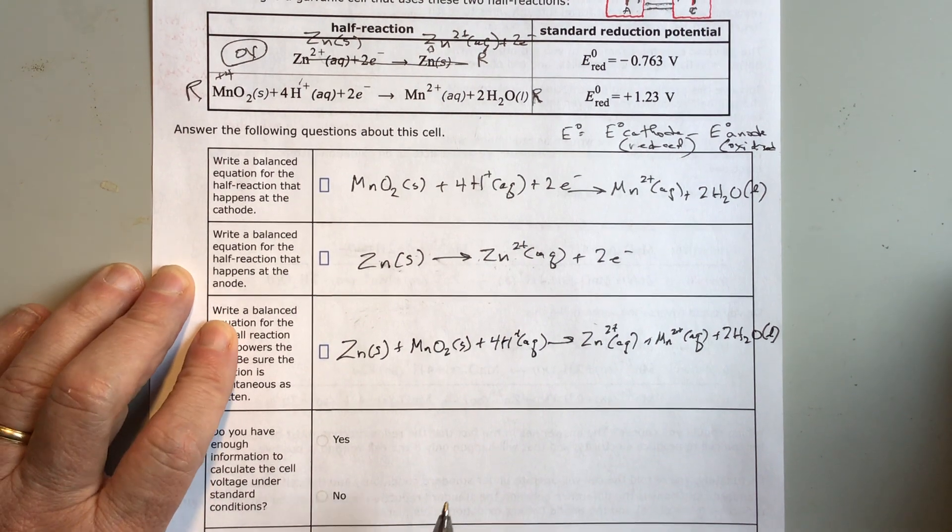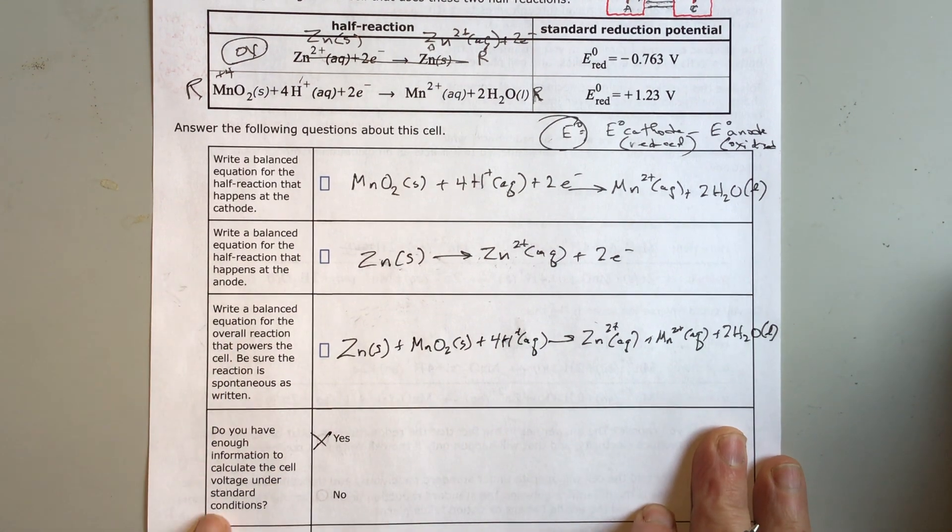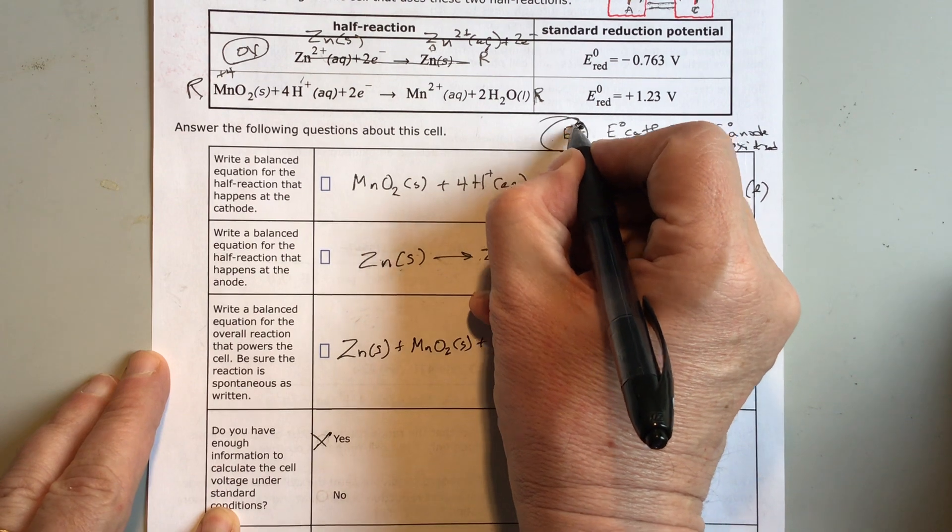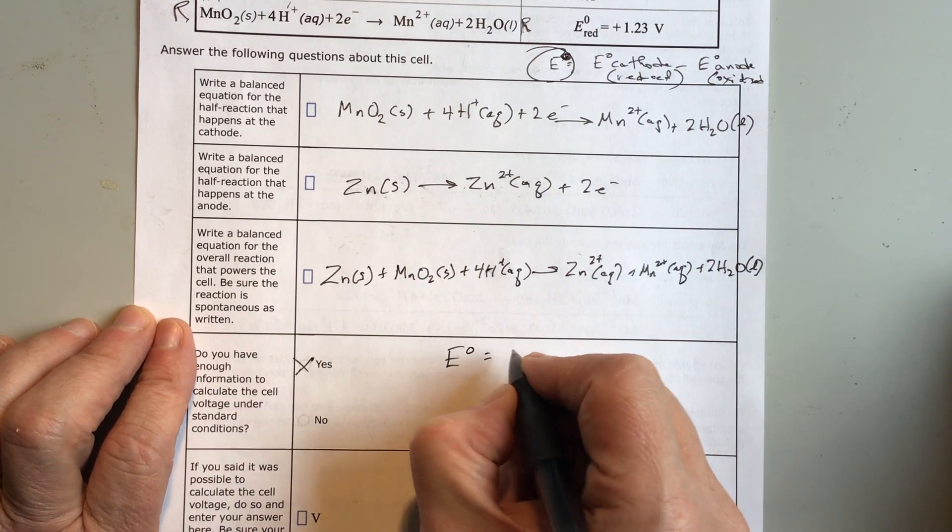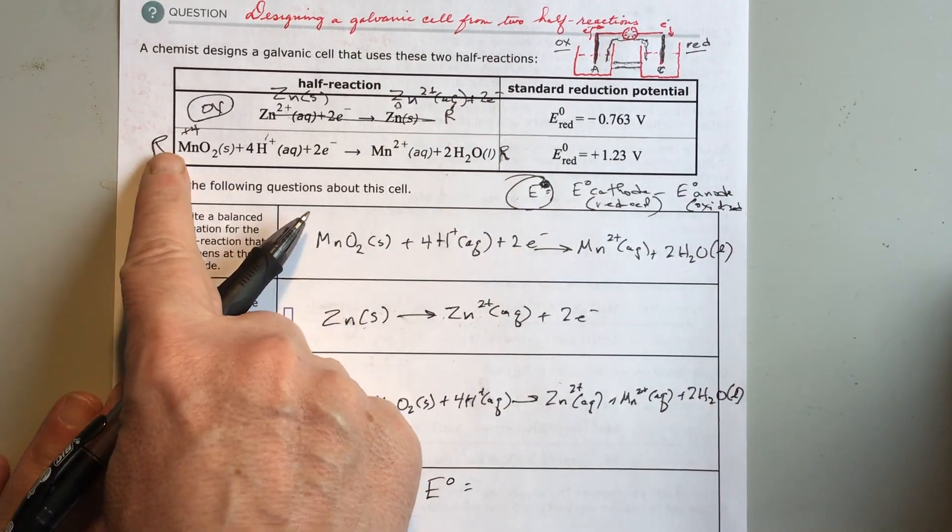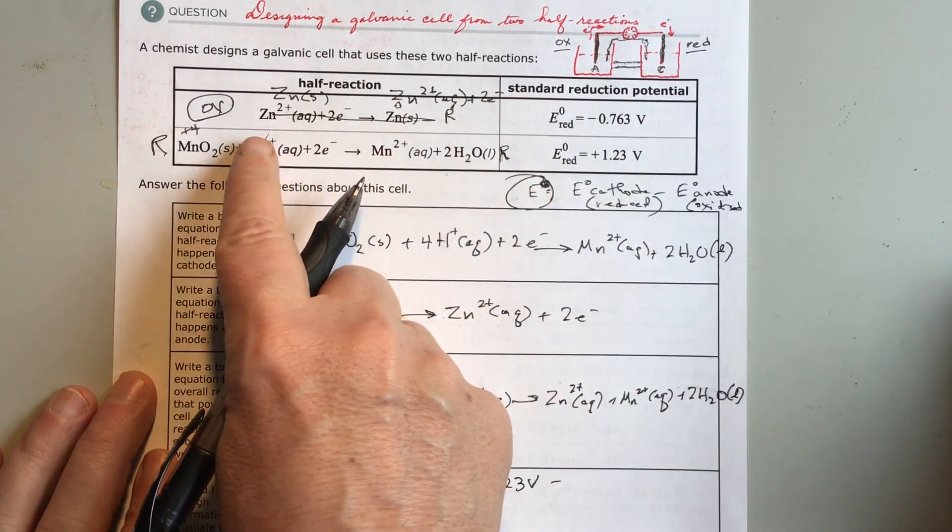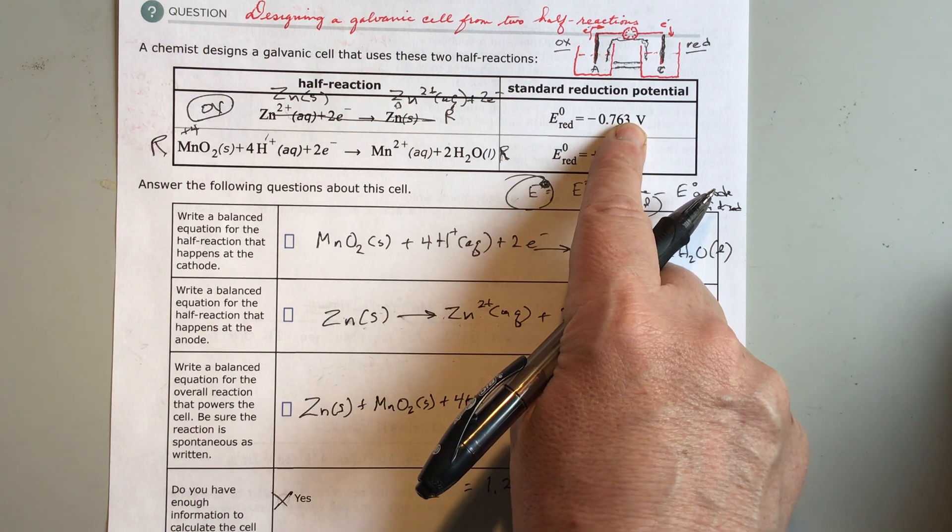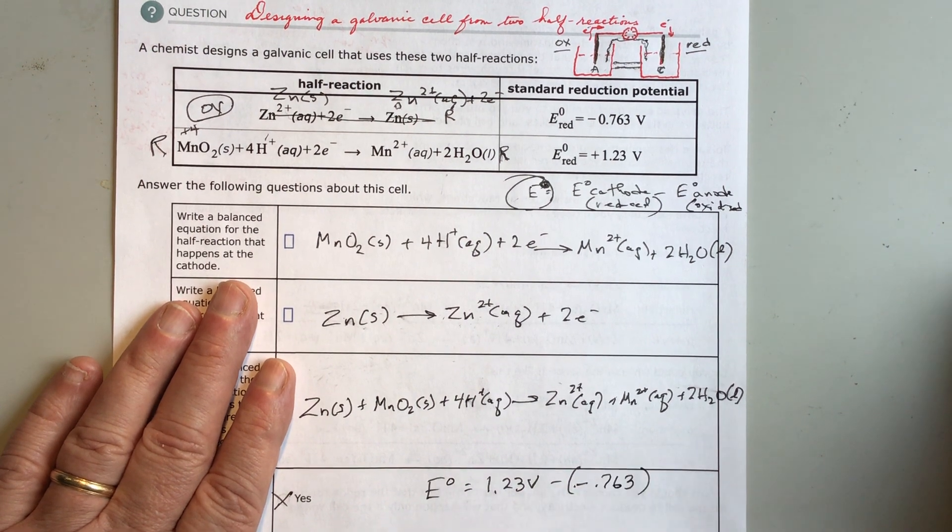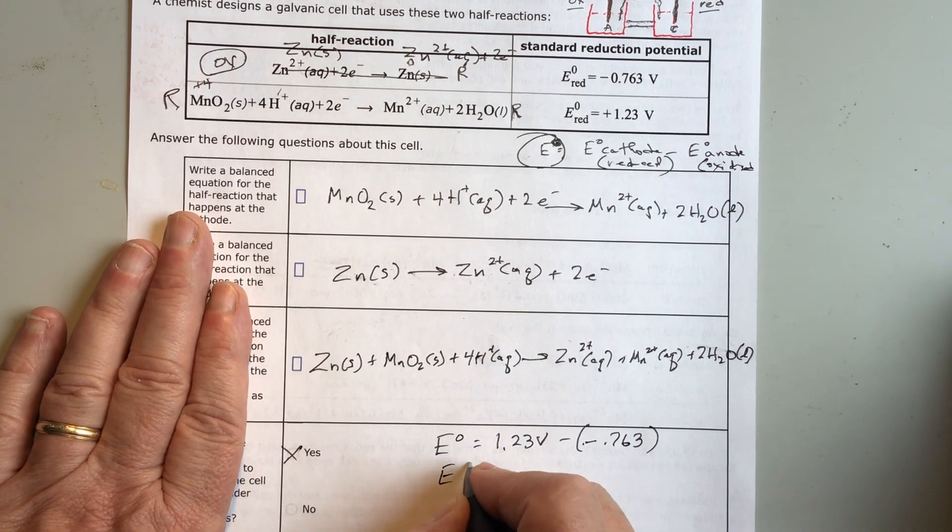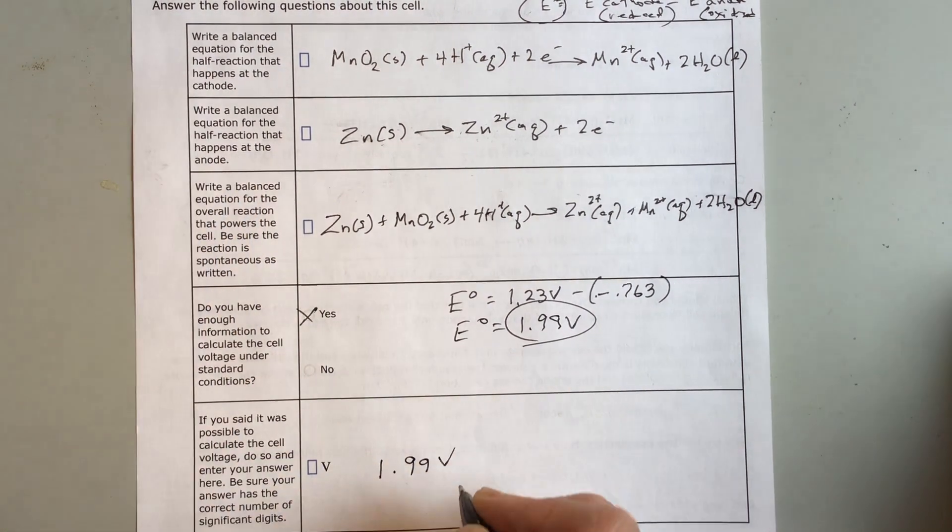Do I have enough information to calculate the cell voltage under standard conditions? Yes, I do. The standard voltage is going to be whatever the cathode is, and the cathode is my reduced. So I'm just going to have that number, 1.23 volts, minus the standard conditions of this, which is negative 0.763 volts. I have a negative negative, which is plus, and I end up with 1.99 volts.